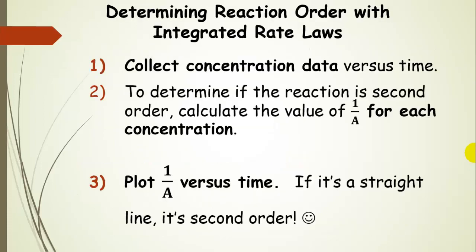When we want to determine the reaction order with integrated rate laws, we're always going to collect concentration data versus time. To check if the reaction is second order, we're going to take the reciprocal of the concentration of A for each concentration at each time and plot that versus time. If it yields a straight line, then it's second order.